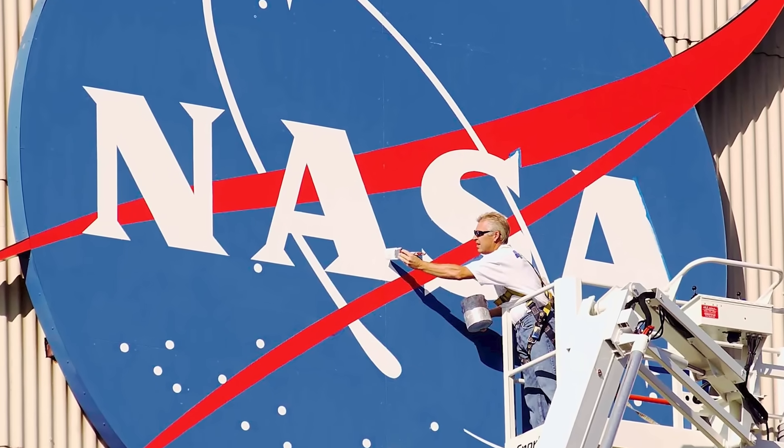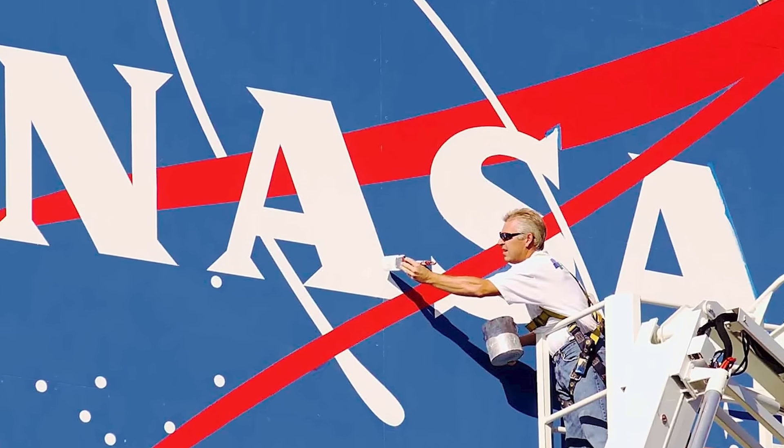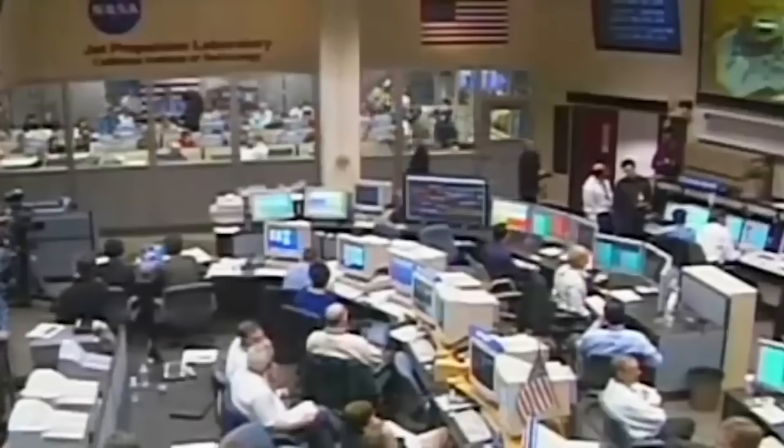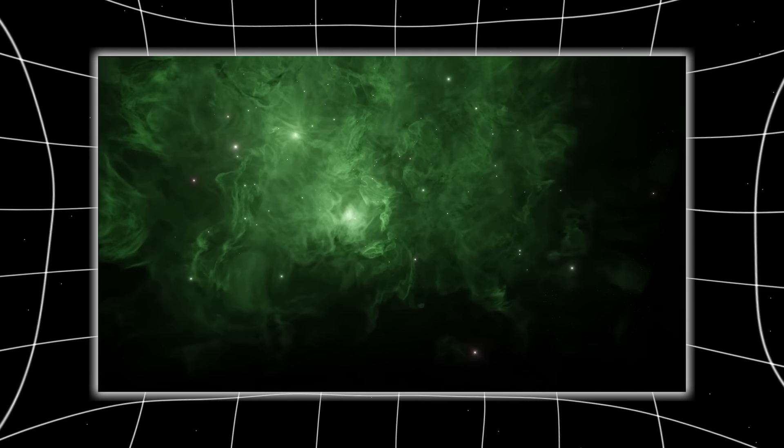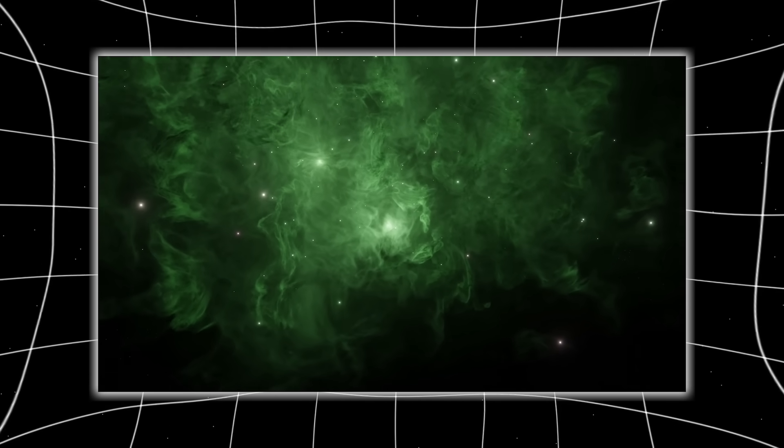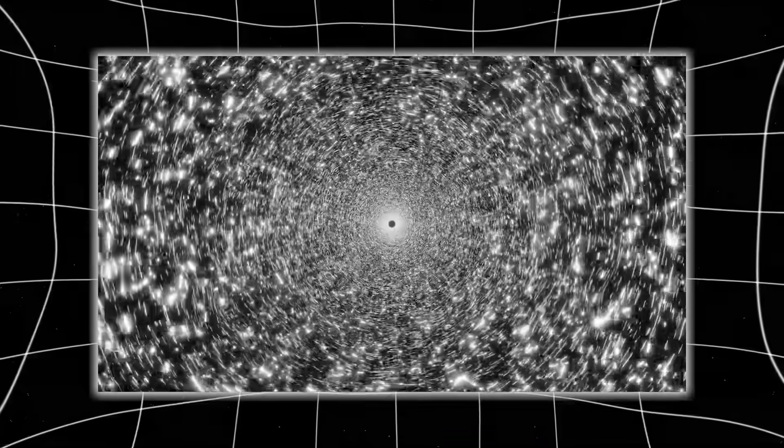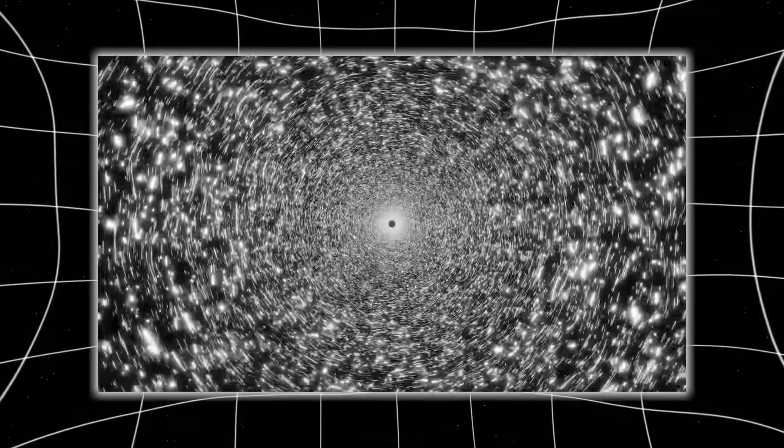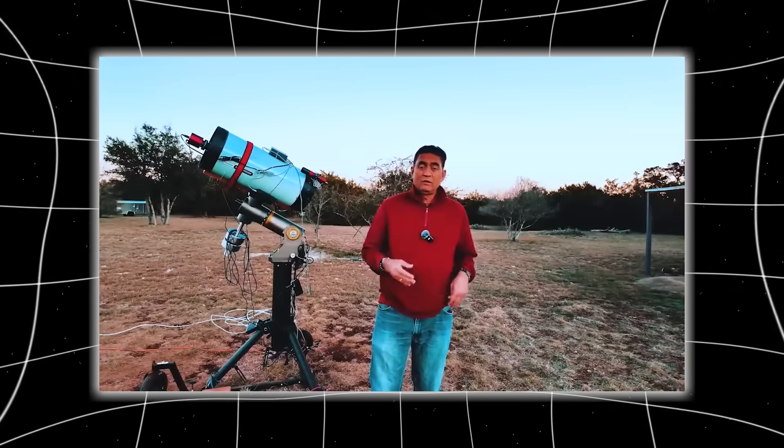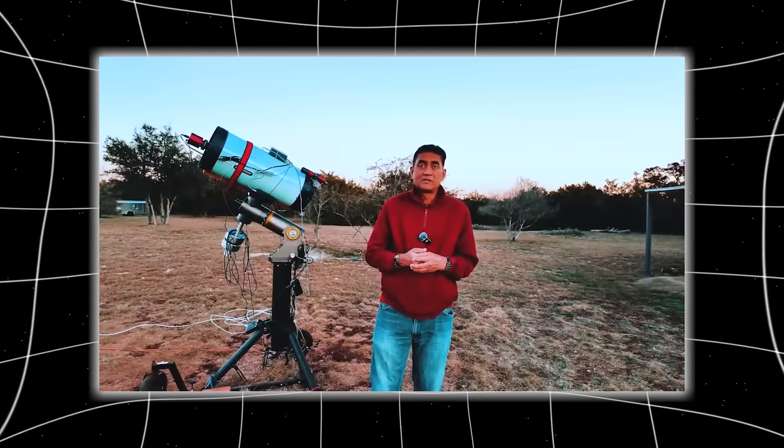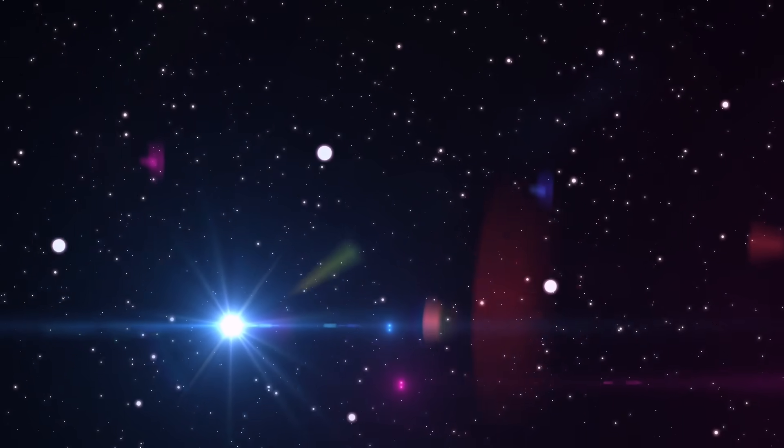Ray begins his video almost casually, saying NASA missed a lot of stuff in their press conference about 3i Atlas, but the reality behind that understatement is staggering because what he found wasn't minor detail. It was foundation-shaking evidence of an interstellar object behaving in ways that standard comet models can't neatly explain. Ray is not a government lab, not a multi-million dollar observatory. He is one person with a telescope, the night sky, and a knack for catching what others overlook.